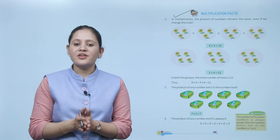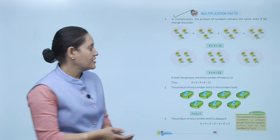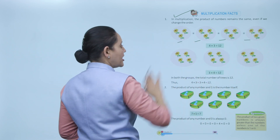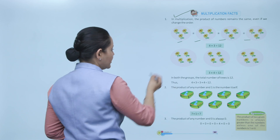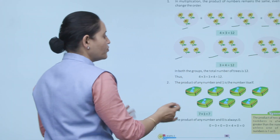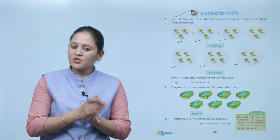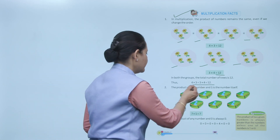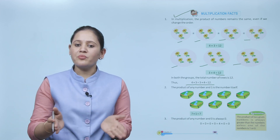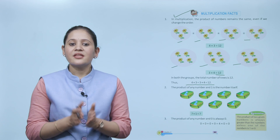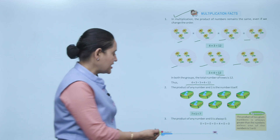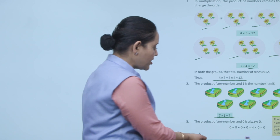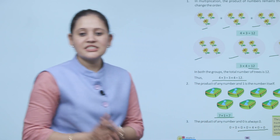Next: multiplication facts. In multiplication, the product remains the same even if we change the order. For example, 3+3+3+3 means 4 times 3, which is 4 into 3 equals 12. Or grouping 4 three times gives 3 into 4, again 12. Thus 4×3 = 3×4 = 12. We can multiply numbers in any order and the product remains the same. Also, the product of any number and 1 is the number itself — like 7 into 1 equals 7. The product of any number and 0 is always 0.